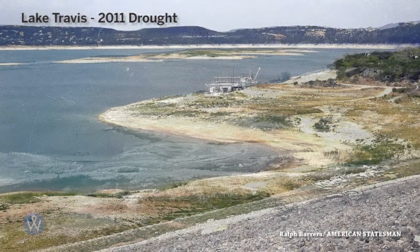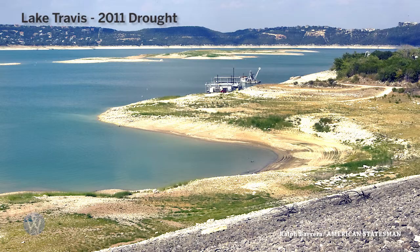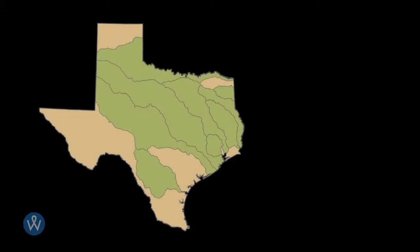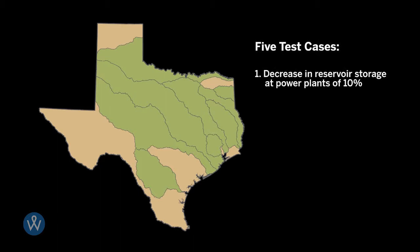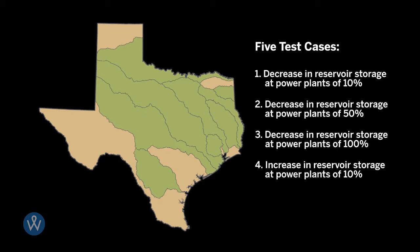Results were compared to existing conditions to show the net change in volume reliability for different water users. We capture a range of drought and water management circumstances with five cases: a decrease in reservoir storage at power plants of 10 percent, a 50 percent decrease in storage, a 100 percent decrease in storage meaning reservoirs are dry, a 10 percent increase in storage at power plants, and construction of new reservoirs at power plants without existing water storage rights.